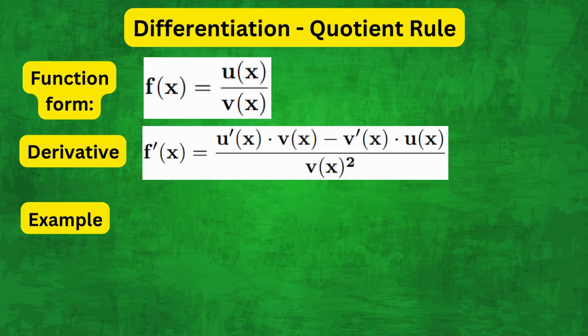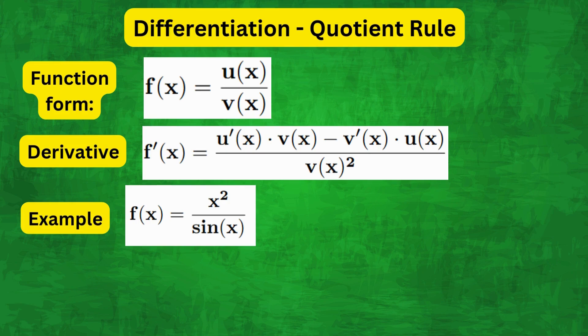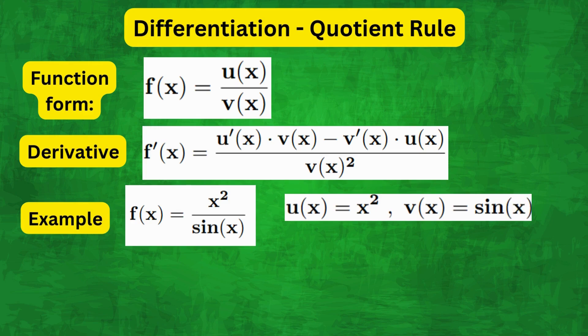Now let's apply this rule to the previous example to see if you get the same answer, in hopefully a slightly easier way. So same as before, we set u(x) equals x², and in this case v(x) is the denominator sin(x). So therefore u'(x) equals 2x and v'(x) is simply cos(x).